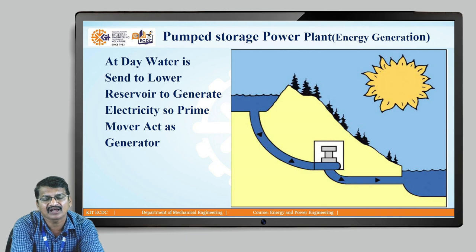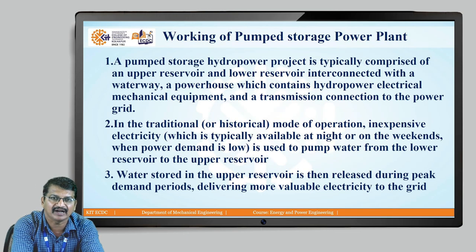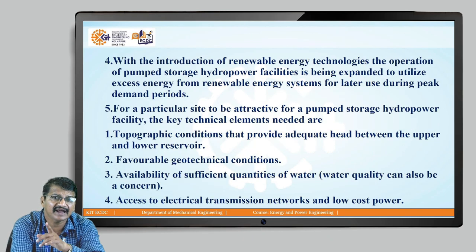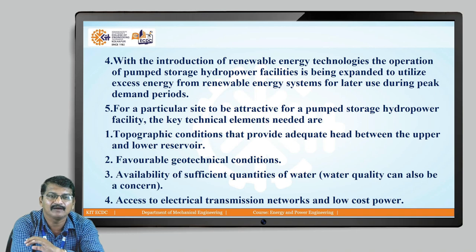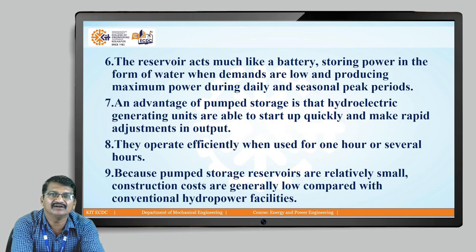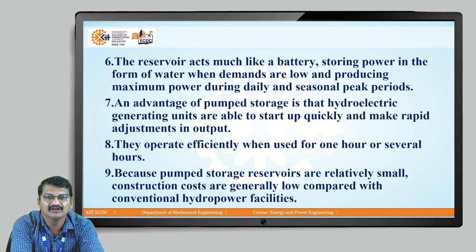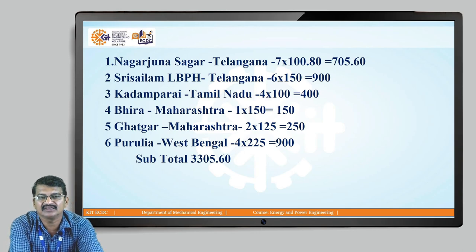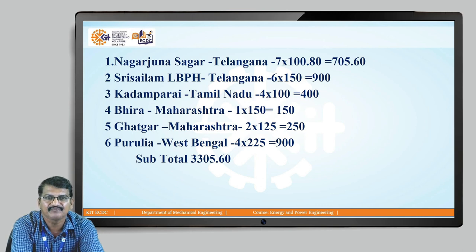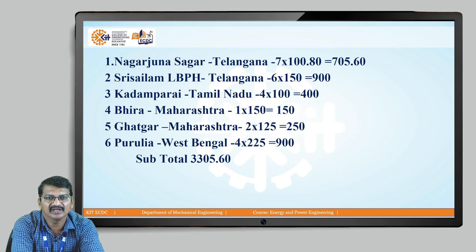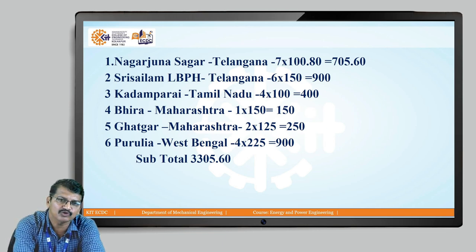In that way the pump storage power plant works — we are not storing electricity, we are storing energy in the form of water in the upper reservoir. The upper reservoir acts much like a battery, storing power in the form of water when demand is low and producing maximum power during daily and seasonal peak periods. Examples of pump storage power plants working in India include Nagarjuna Sagar and Srisailam in Telangana, Kadamparai and Paraiyin Tamil Nadu, and Ghira, Ghatgar from Maharashtra, and Purulia from West Bengal.